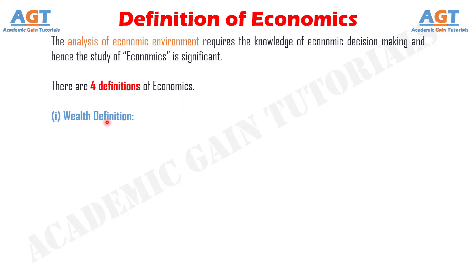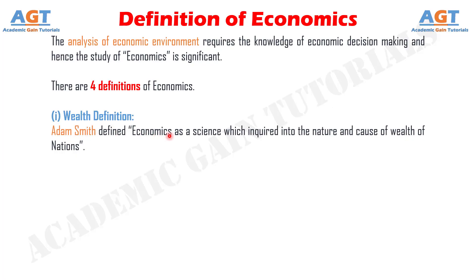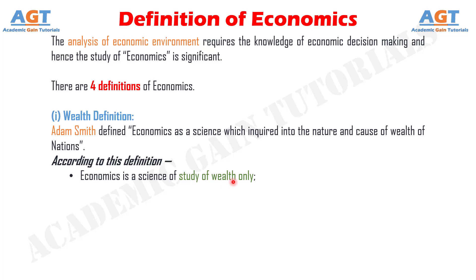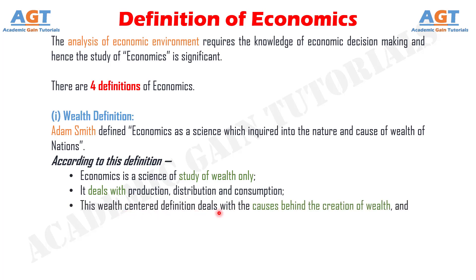Number 1: Wealth Definition of Economics. Adam Smith defined economics as a science which inquired into the nature and cause of wealth of nations. According to this definition, economics is a science of study of wealth only. It deals with production, distribution, and consumption. This wealth-centered definition deals with the causes behind the creation of wealth, and it only considers material wealth.